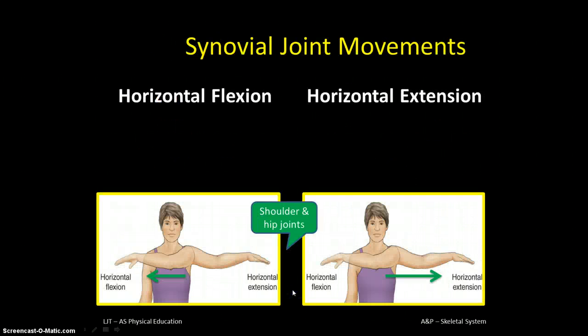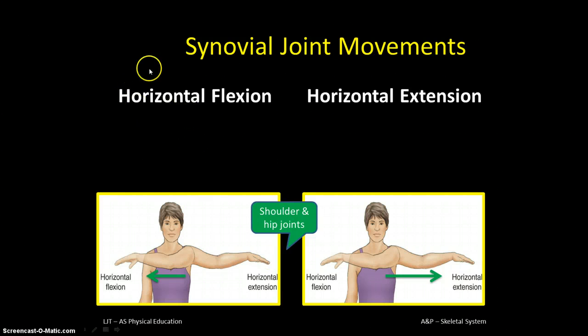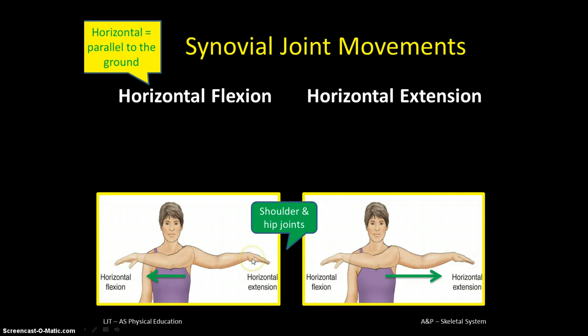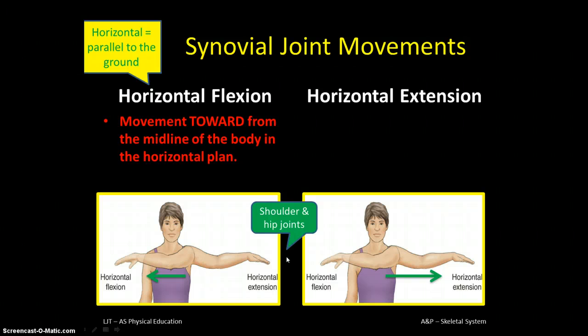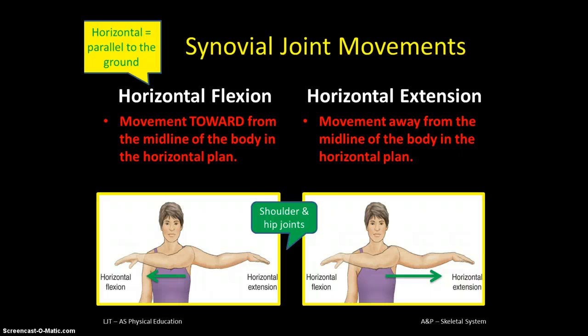Horizontal flexion and extension — the key word here is 'horizontal.' As you can see from the picture, the movements occur horizontally, parallel to the ground. Horizontal flexion is moving towards the midline; horizontal extension is the outward movement away from the midline. Breaststroke swimming would involve horizontal flexion and extension in the arm action.